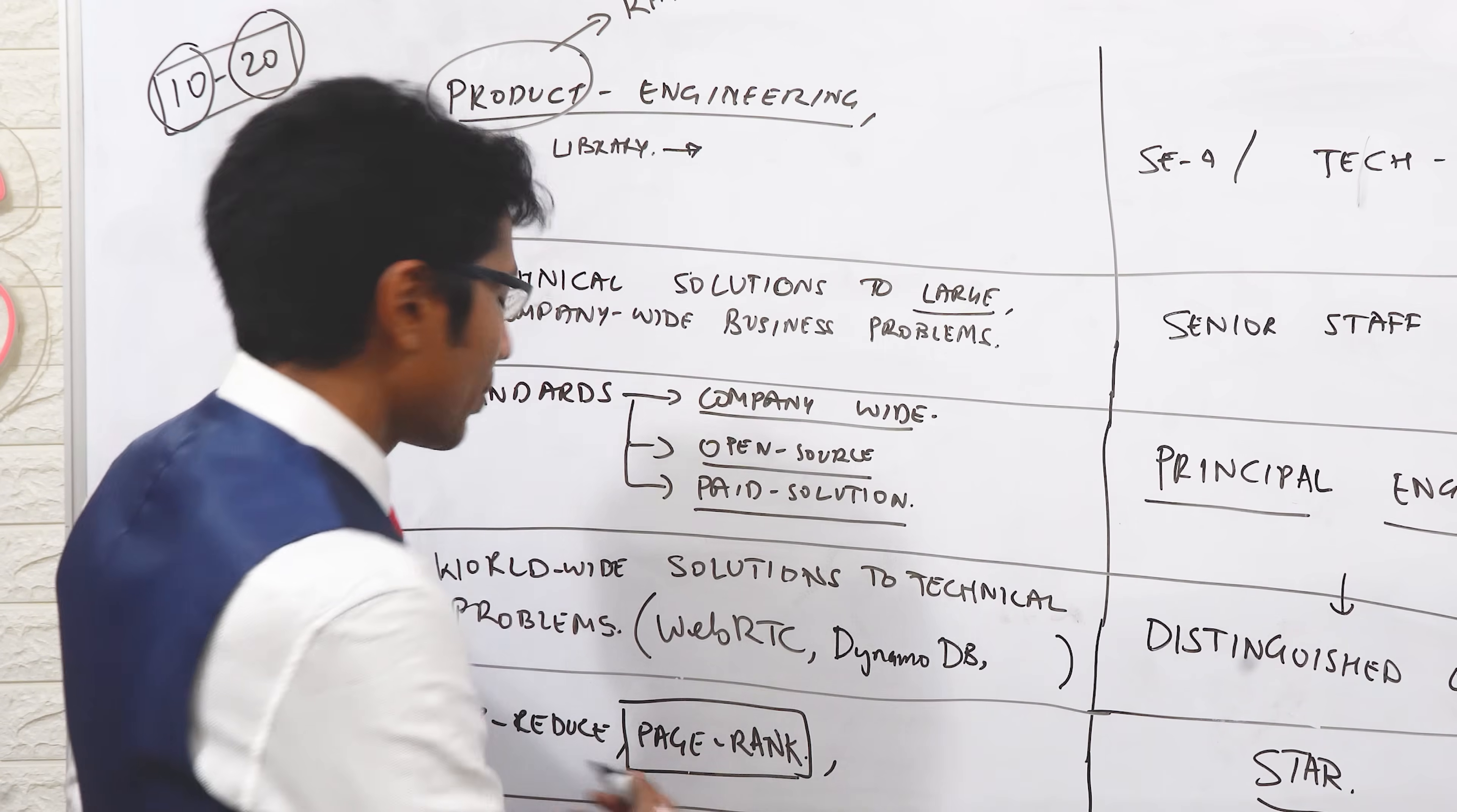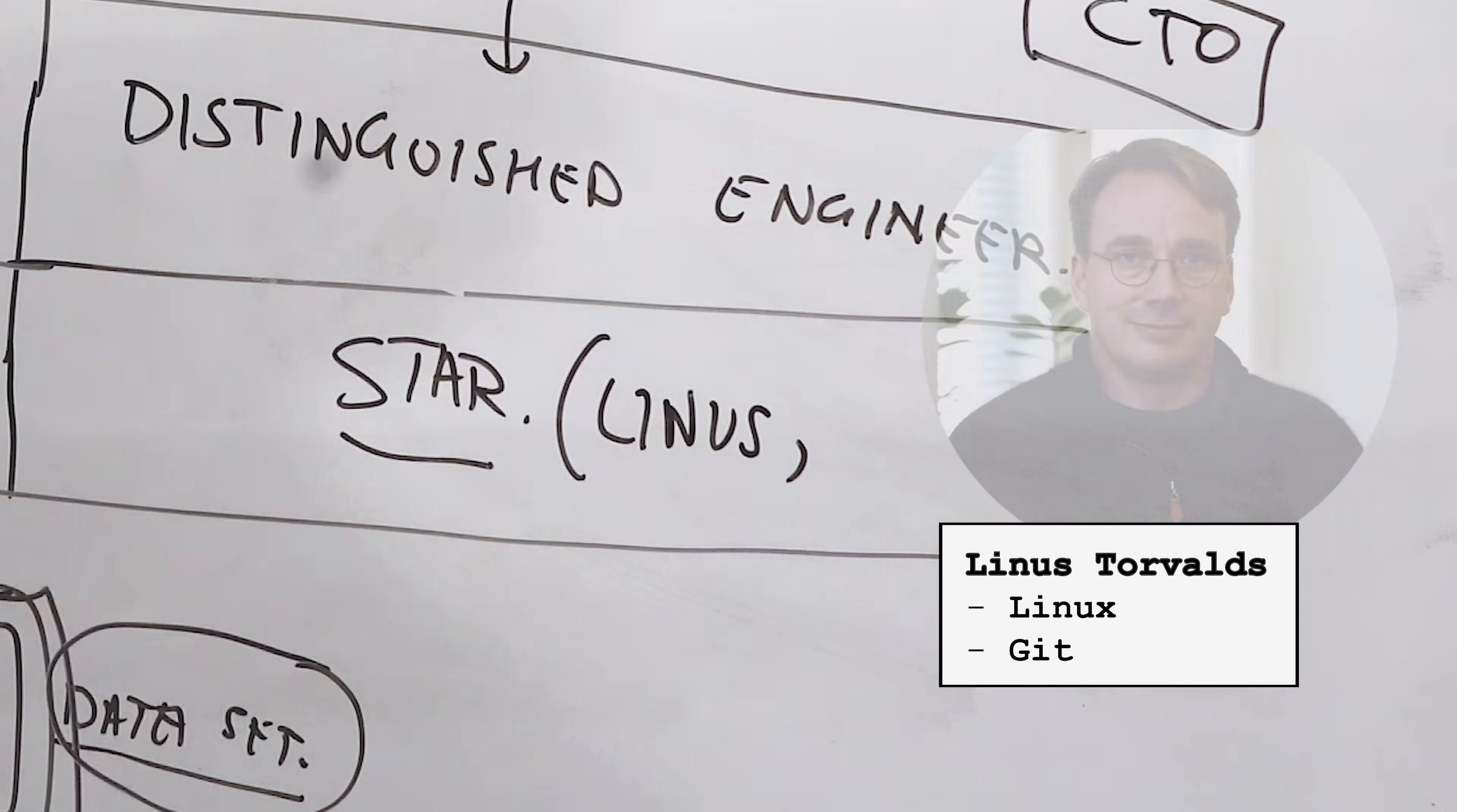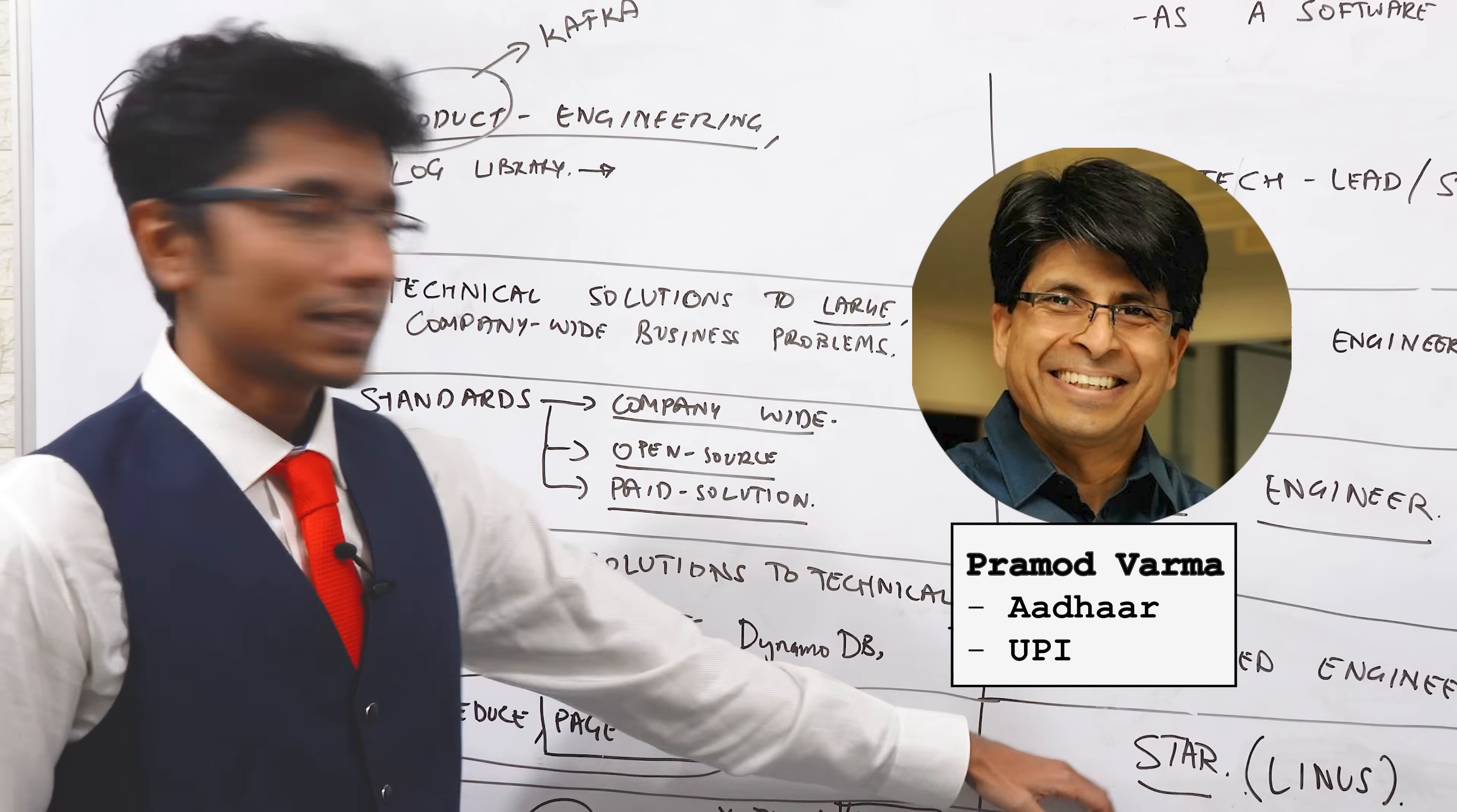To some extent, you can say DynamoDB is also maybe a L10 level. Like multiple databases have sprung out of that architecture, the internal architecture of sharding in different places and storing your data efficiently. So who would you rank as stars? Maybe Linus. The guy who made Linux and Git. Sanjay probably deserves to be the star engineer.